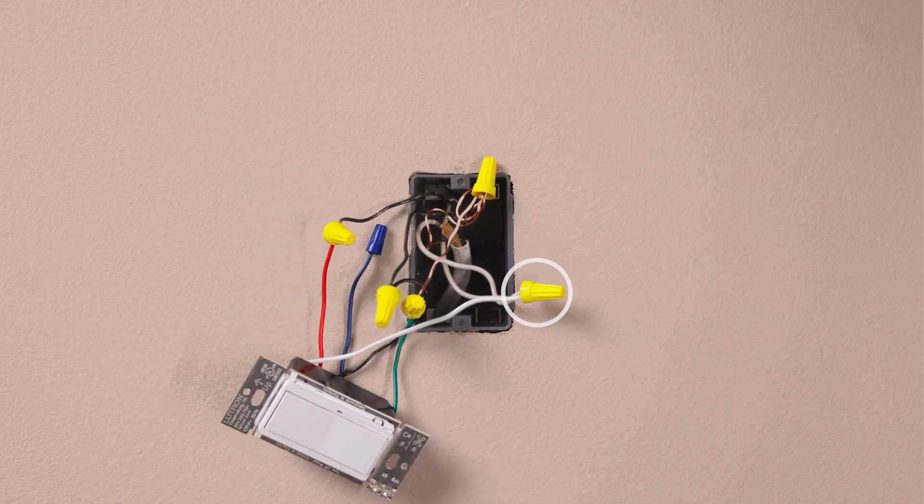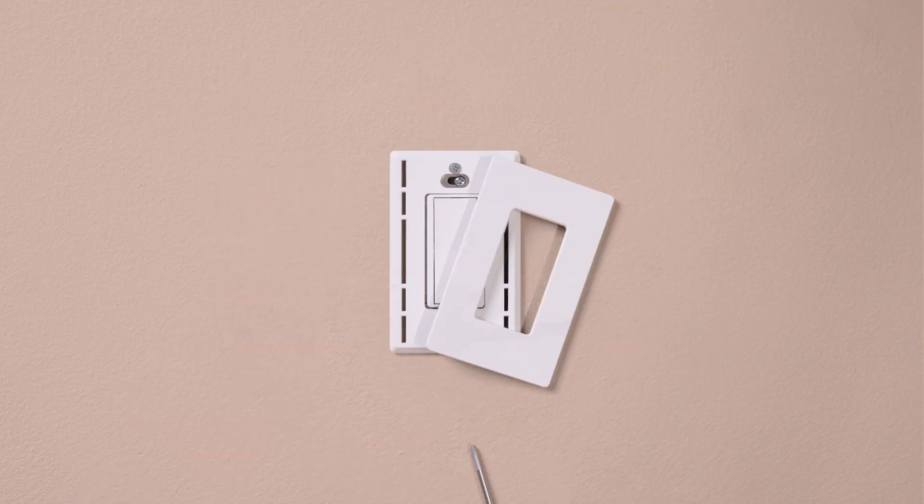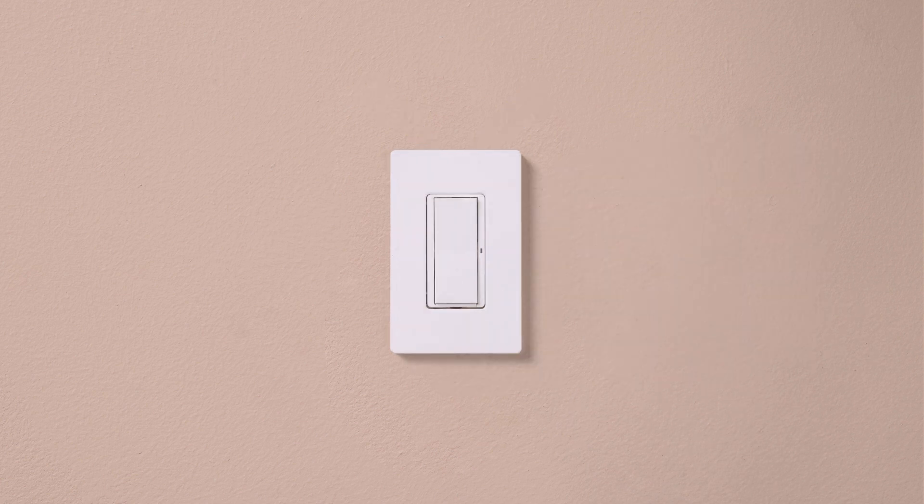Connect the white wire on the new control to the neutral wires in the wall box. Mount the control, install your wall plate, and turn the power back on at the breaker.